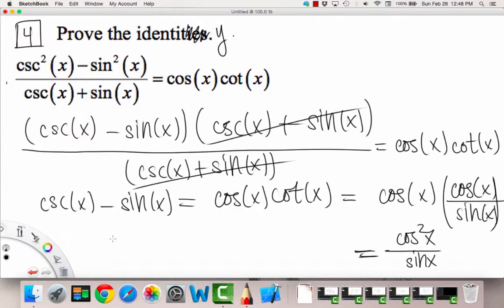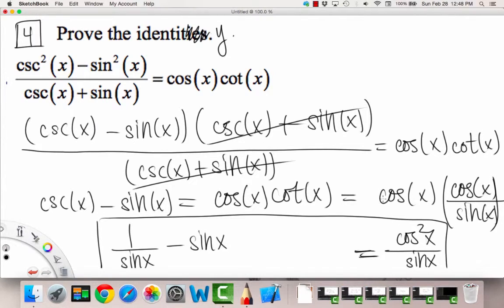So cosecant x, that's the same thing as saying 1 over sine. So if we have 1 over sine x minus sine x, we can get a common denominator. So this is where we're at right now. Let's continue this on the next slide.